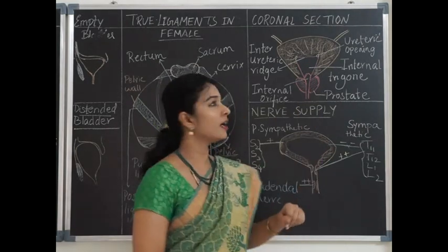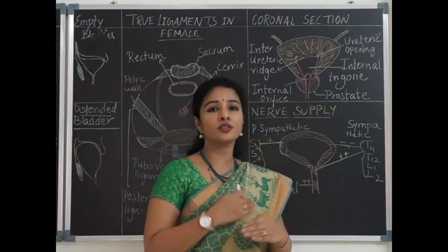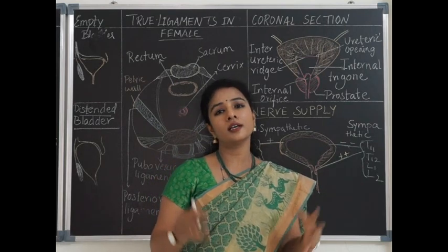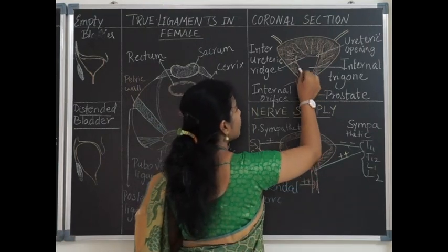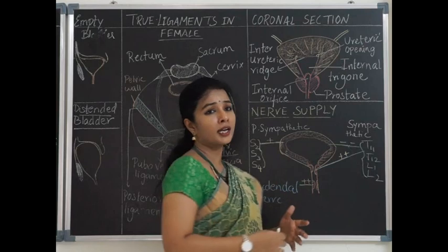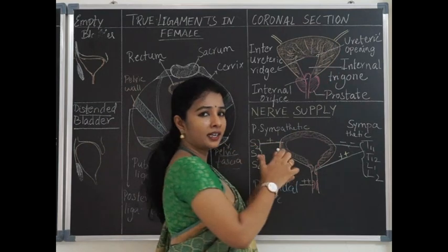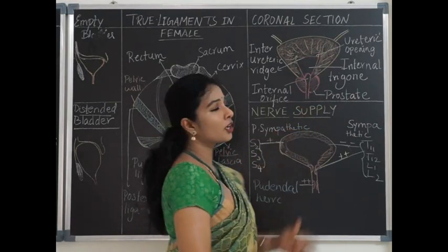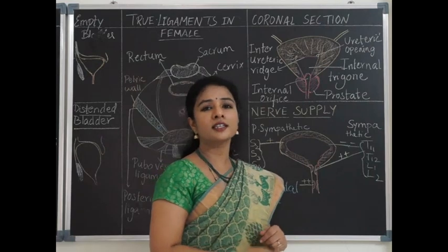Moving on to the interior of the urinary bladder — most of its lining consists of mucosal foldings called rugae, which are temporary folds that disappear when the bladder is distended. In the most dependent part, near the internal orifice continuing as the neck and urethra, there is a triangular shining structure called the internal trigone. The internal trigone differs from the rest of the bladder because it has no rugae and is glistening, as the submucosa is absent there.